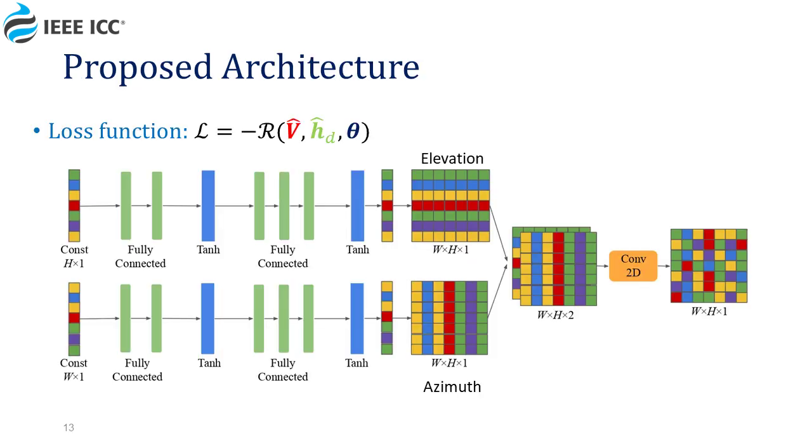Our network architecture is presented in this slide. The loss function is defined as minus the data transmission rate between the base station and the receiver when it depends on the direct and indirect channel as well as the IRS phase shifts. We will try to minimize the loss by choosing the best configuration for transmitting the information to the user.